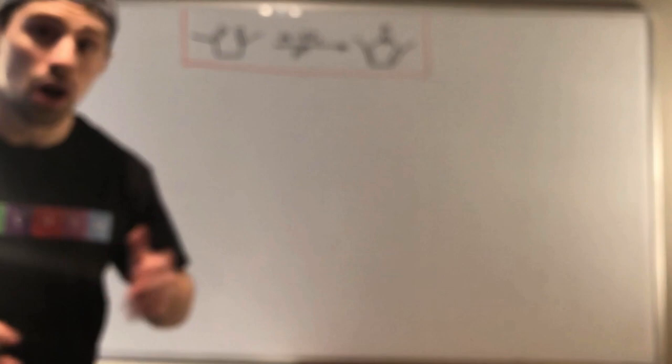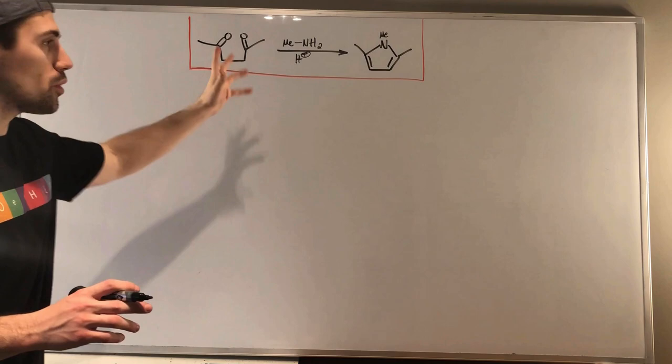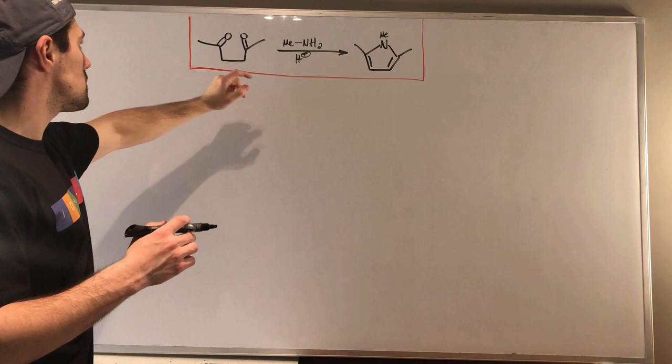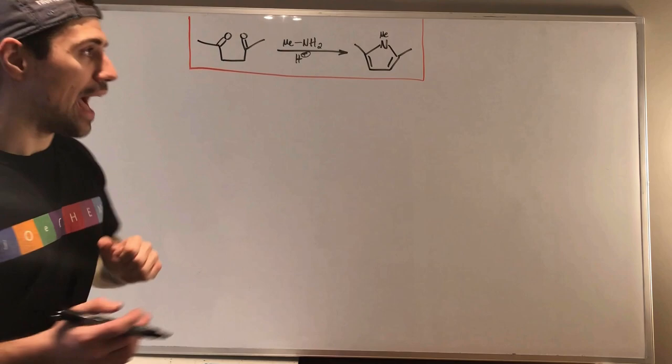Alright gang, let's dive into the mechanism. So just did a simple pyrrole derivative synthesis, a simple Paul-Knorr synthesis of a pyrrole derivative, rather. So, we're just doing some methylamine, acidic conditions. We're going to take this gamma-dicarbonyl, and we're going to get our wonderful pyrrole derivative out of it. How do we do this?